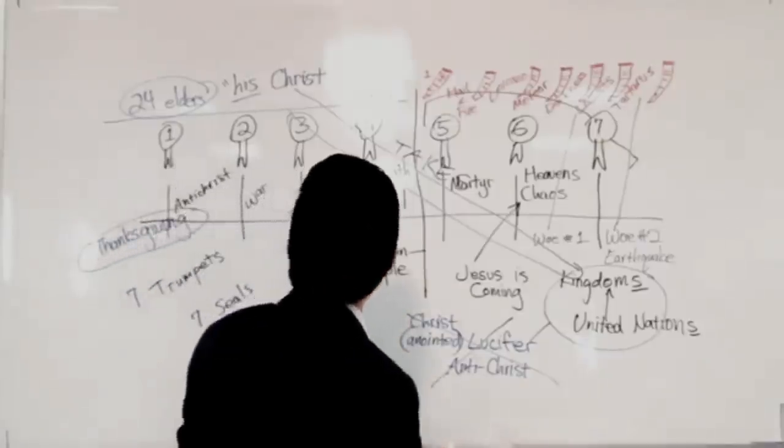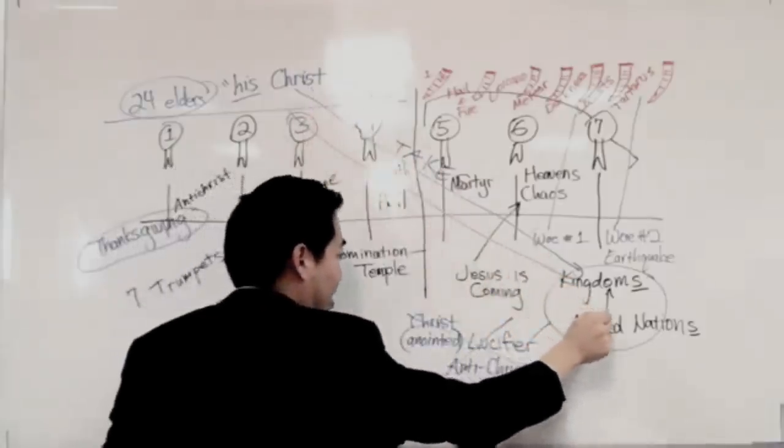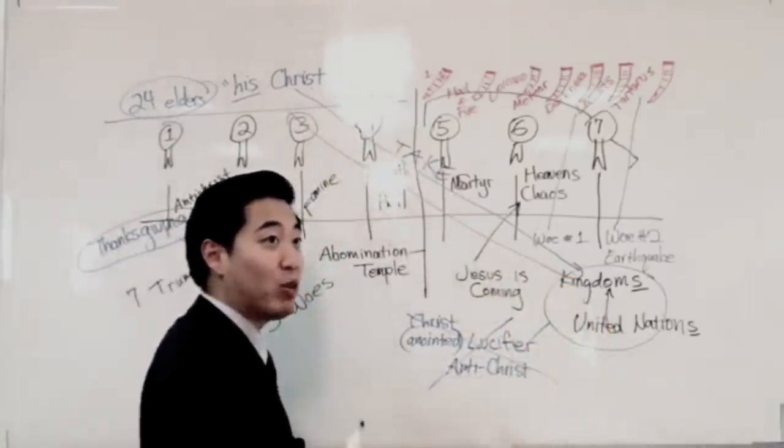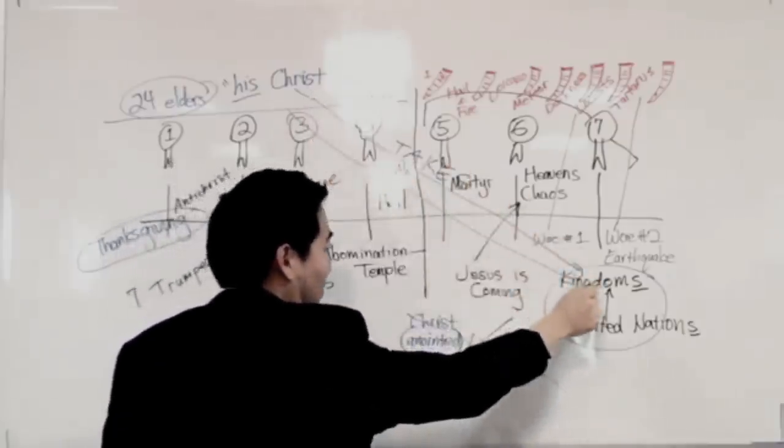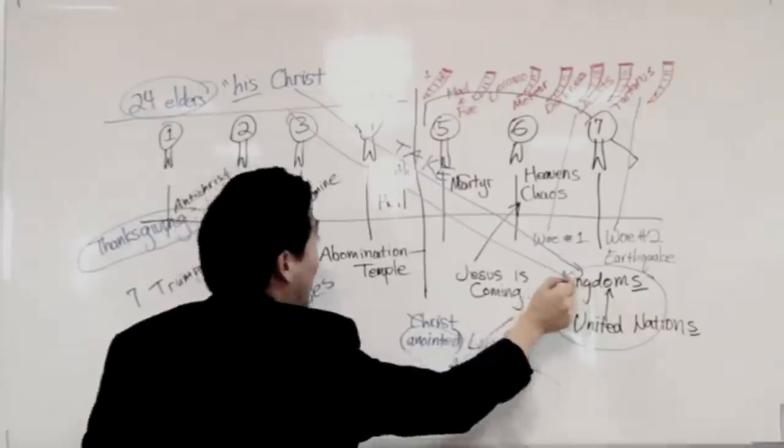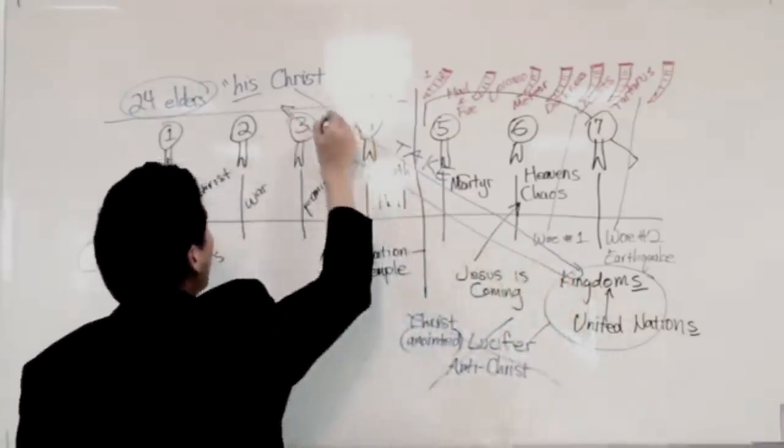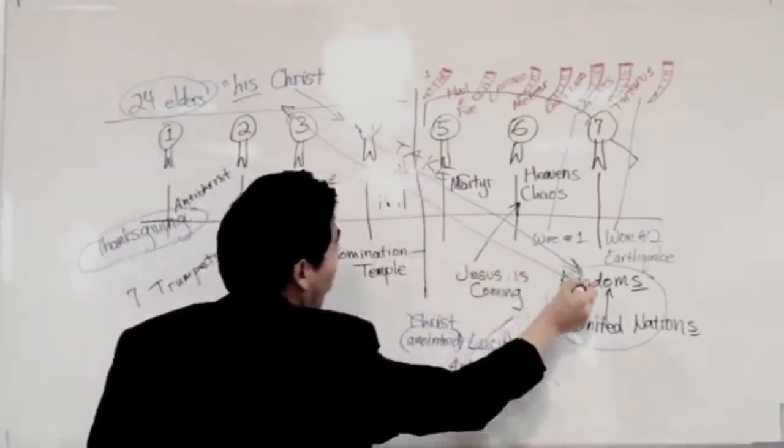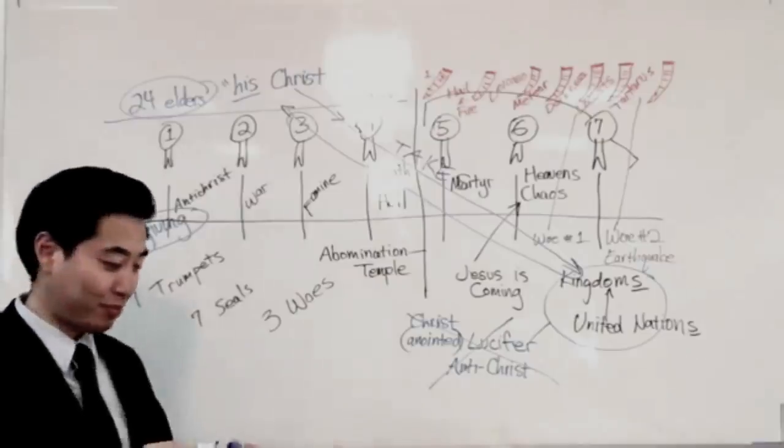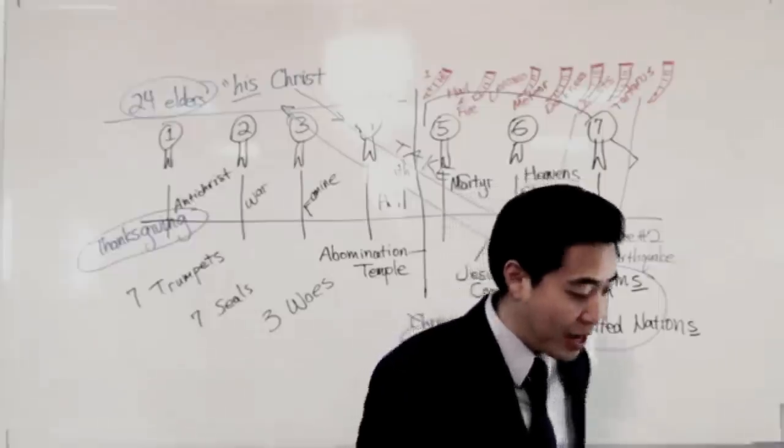Because thou hast taken to thee thy great power. Look at that. He has taken to thee thy great power. He takes the power from Satan and gets it himself. He takes it. Now, if you recall, in Luke chapter 4, Satan said that these kingdoms I will give to you, Jesus. Why? Because it was delivered unto me. Because originally God gave it to Satan. But one day God's going to take it back. Like that. He originally gave it to him, the devil. But then one day God's going to get it back for Himself. I can't wait for that day.